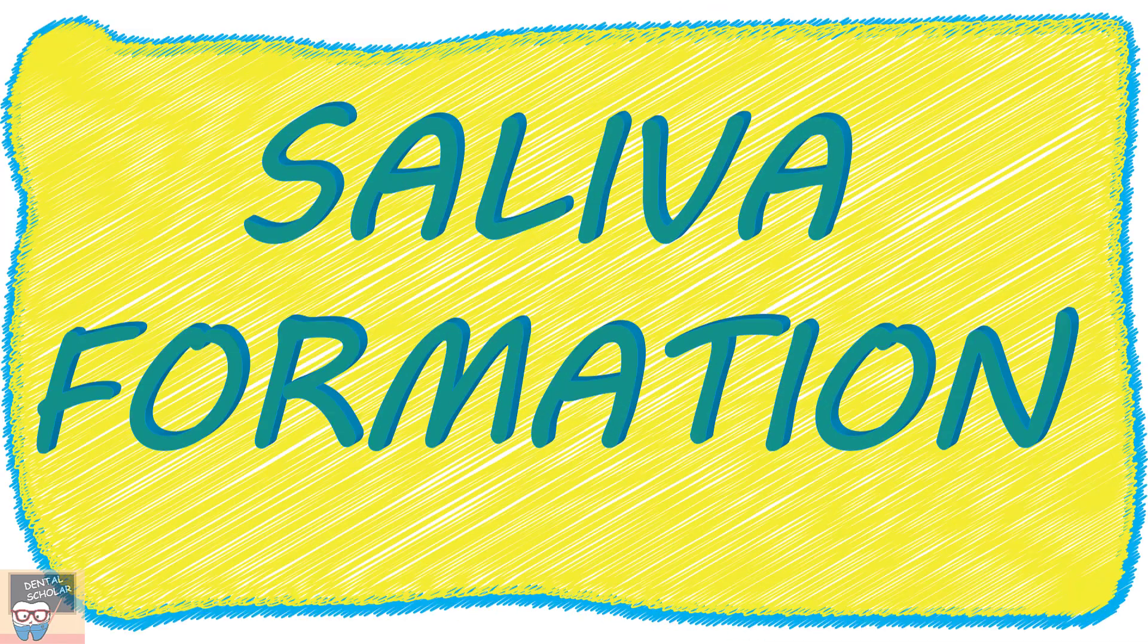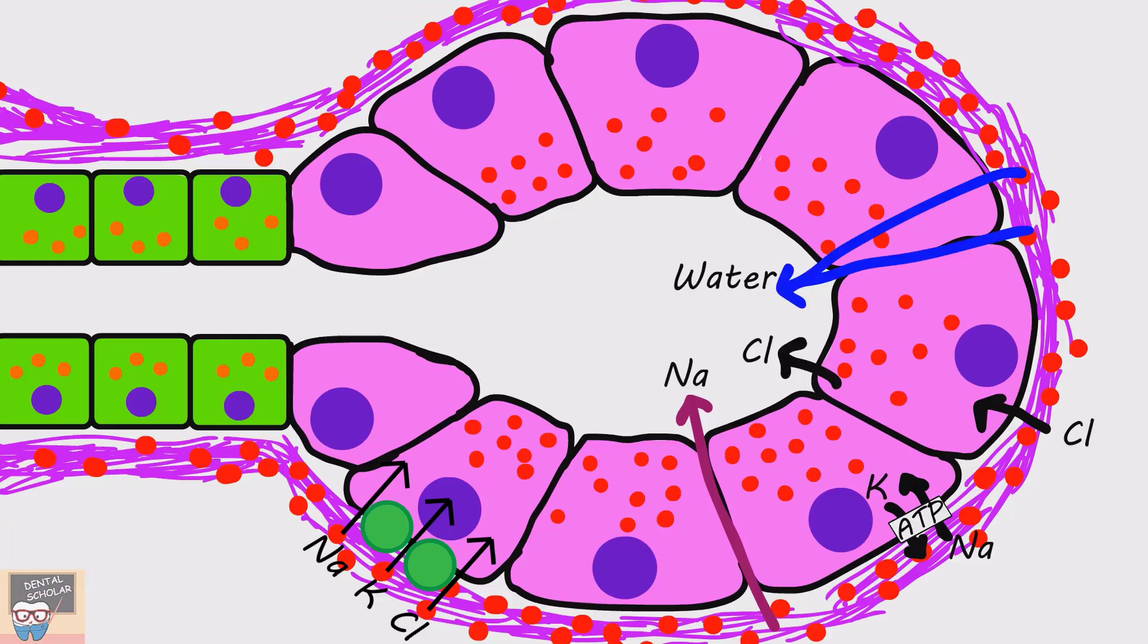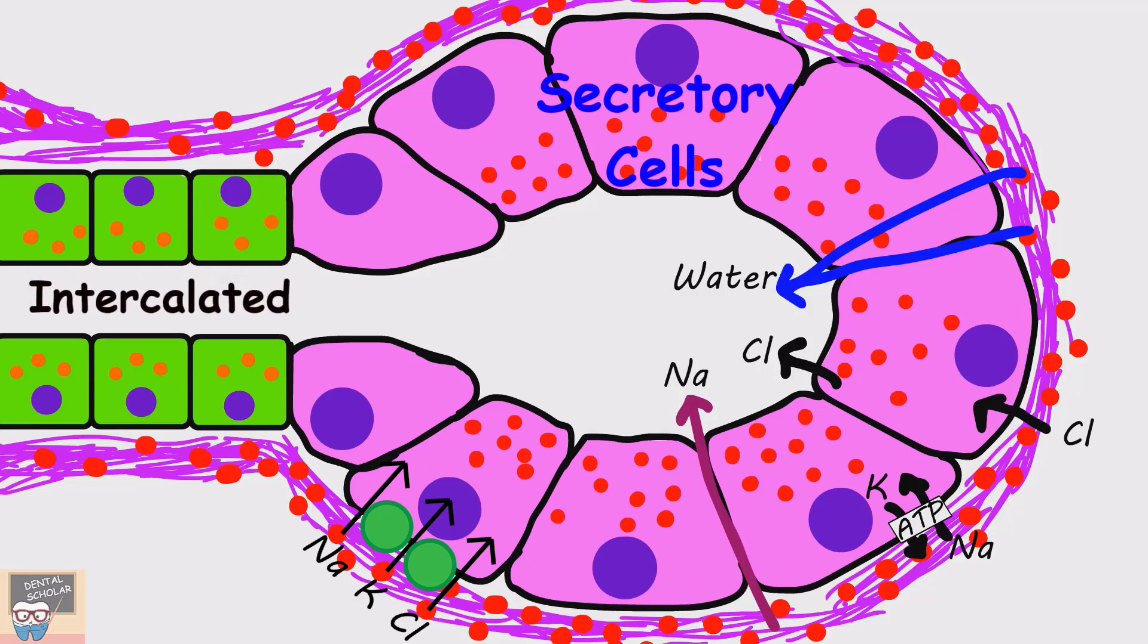Hello everyone. In this video, I will tell you about saliva formation. The saliva is secreted by the secretory cells of the salivary acini and the intercalated duct cells, and later on it is modified in striated duct.